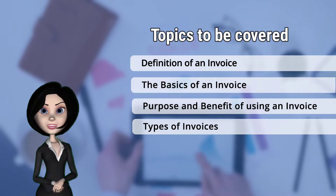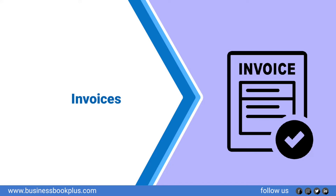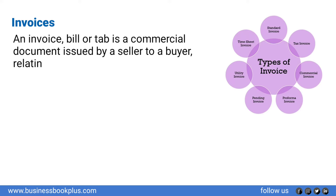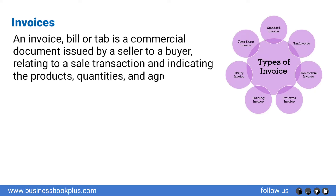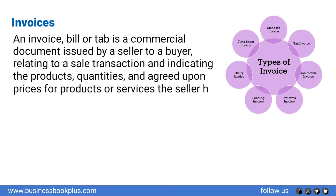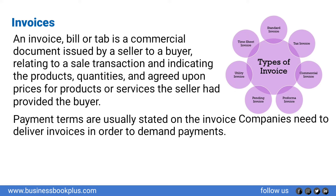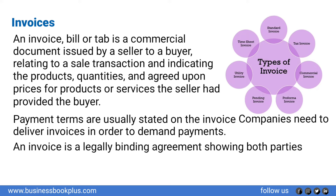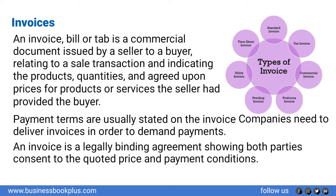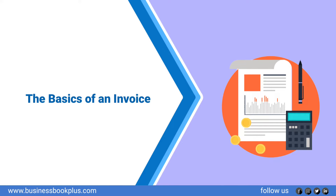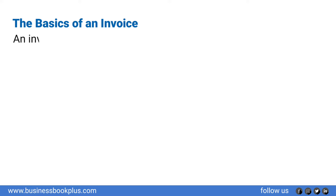Types of invoices and invoicing. An invoice, bill, or tab is a commercial document issued by a seller to a buyer relating to a sales transaction, indicating the products, quantities, and agreed-upon prices for products or services the seller had provided the buyer. Payment terms are usually stated on the invoice. Companies need to deliver invoices in order to demand payments. An invoice is a legally binding agreement showing both parties' consent to the quoted price and payment conditions.